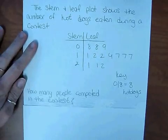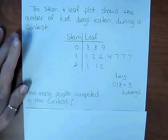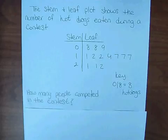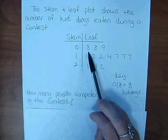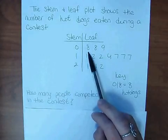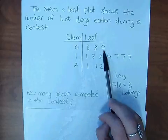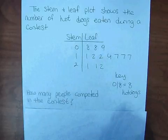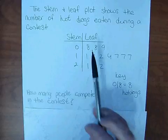How many people competed in the contest? Well, if the stem and leaf plot shows the number of hot dogs eaten during a contest, 8 hot dogs was eaten by one person, and then another person ate 8, and another person ate 9, and so on. So if we count each piece of data, we'll know how many people competed in the contest.